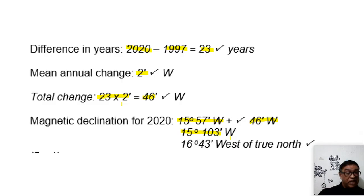Remember, I can't keep my answer like this. If it's 60 or more, I have to convert it to degrees. So 60 goes into this once, this becomes 16, I'm left with a remainder of 43 minutes. So my magnetic declination now is 16 degrees 43 minutes west of true north.